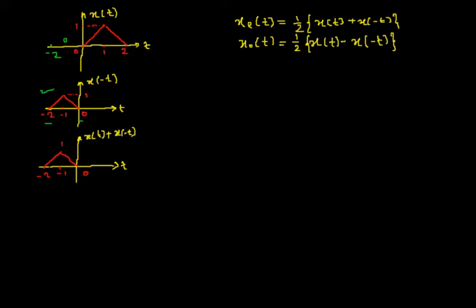Now the task is to add the signals from the range 0 to 2. X(t) is the triangular wave from 0 to 2 and X(-t) is 0 for that range. Adding these two signals gives again a triangular shape with time period 2, value 1, and amplitude staying at 1.